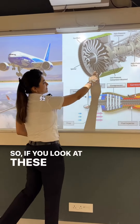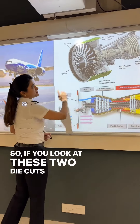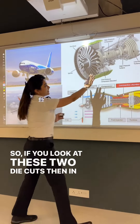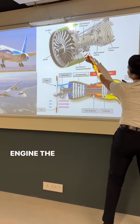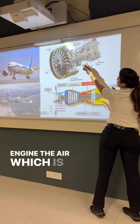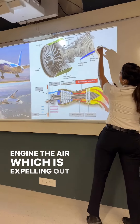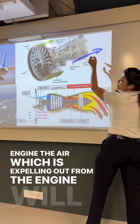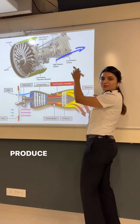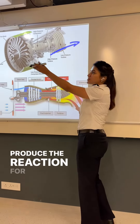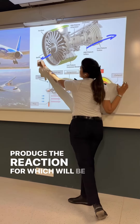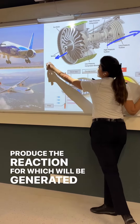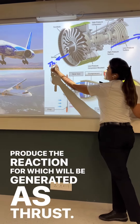If you look at these two diagrams, in a turbojet engine, the air which is expelled out from the engine will produce a reaction forward, which will be generated as thrust.